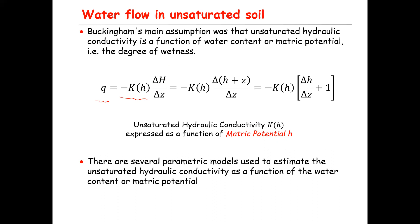The hydraulic gradient has two components: one is the matric potential, that is the lowercase h, and Z is the gravitational head. Since we're dealing with unsaturated conditions, there is no pressure potential — as discussed in a previous lecture, through the unsaturated zone the pressure potential is equal to zero and you have negative pressure. So capital H has two components: lowercase h plus Z, the gravitational head. You can rewrite the equation as minus K(H) times delta h over delta Z plus one, and that describes flow through the unsaturated soil.